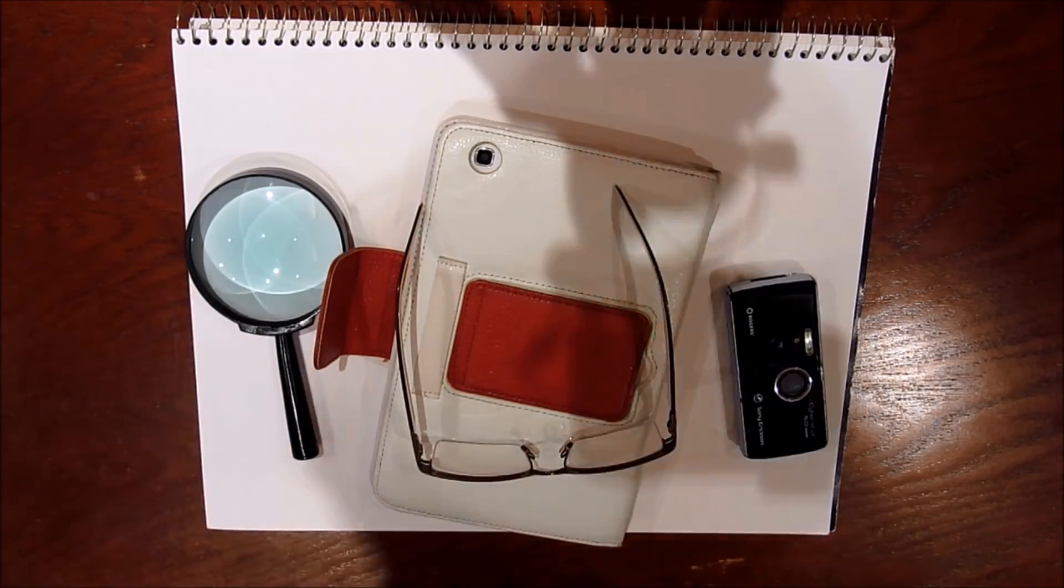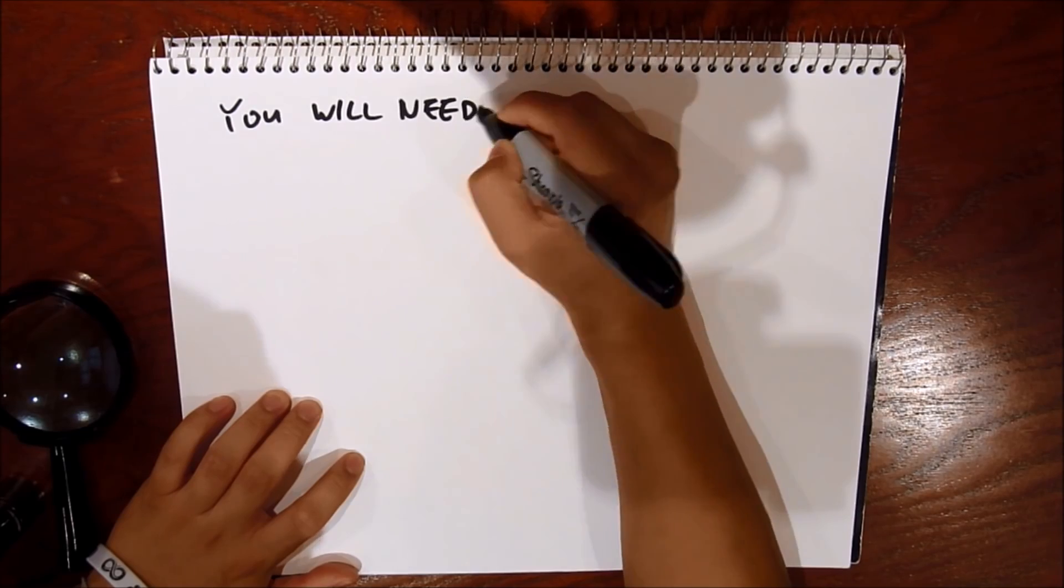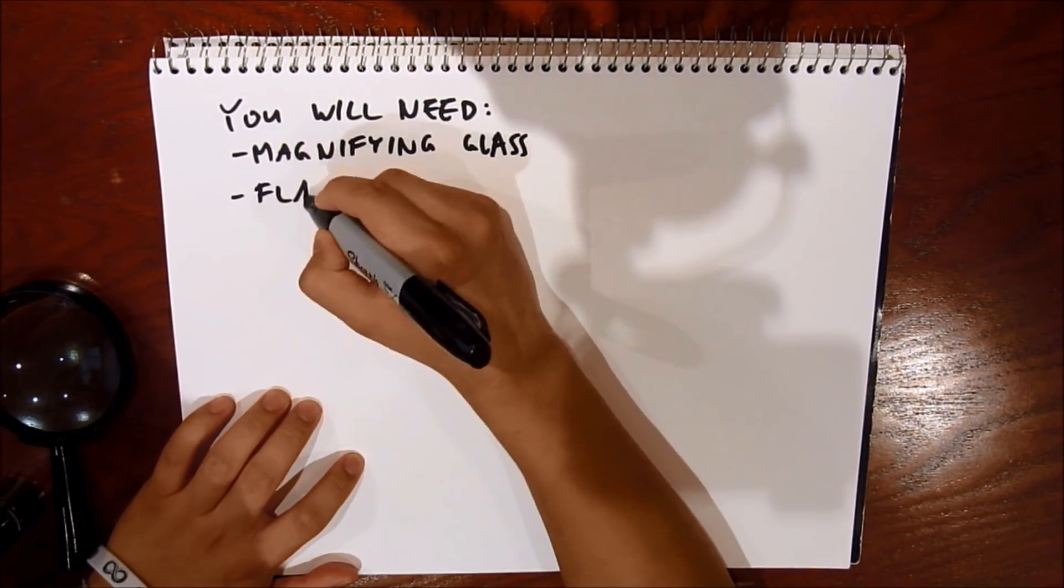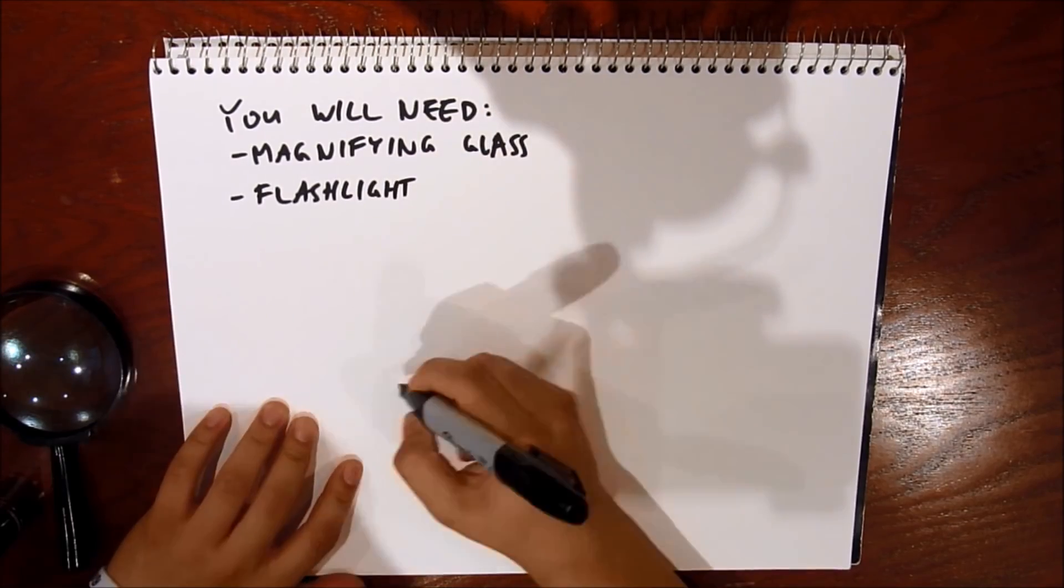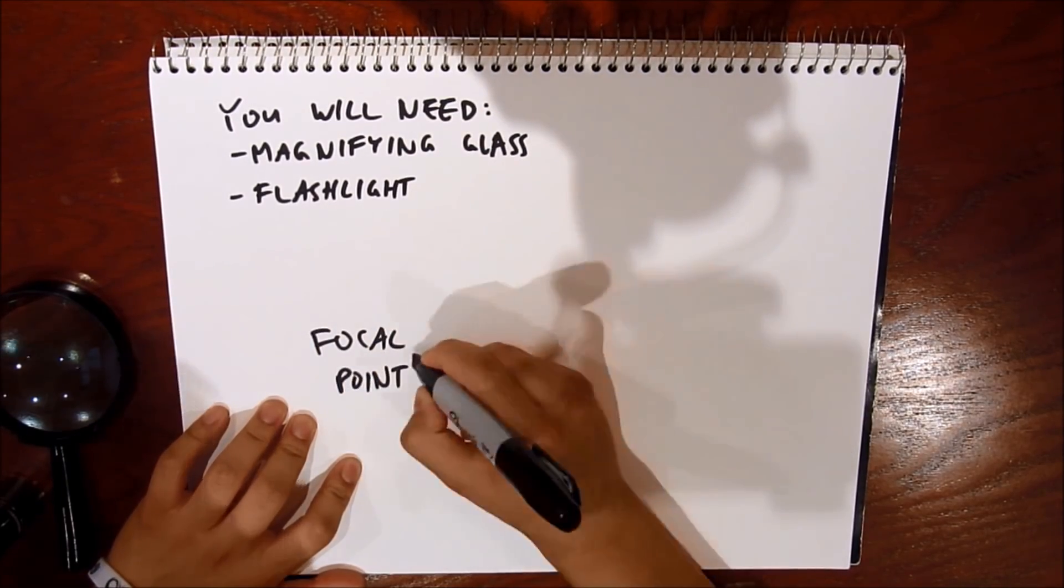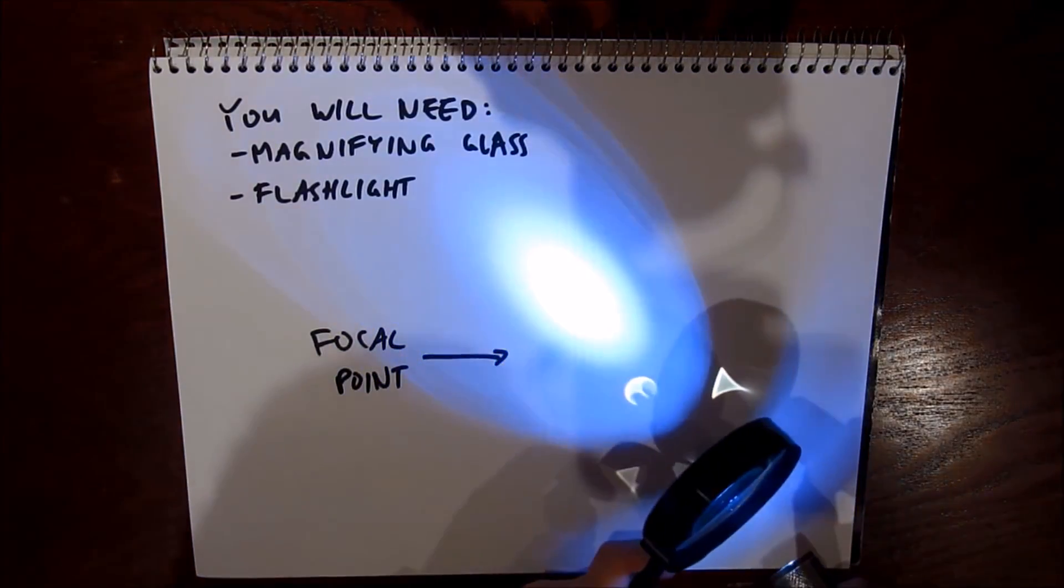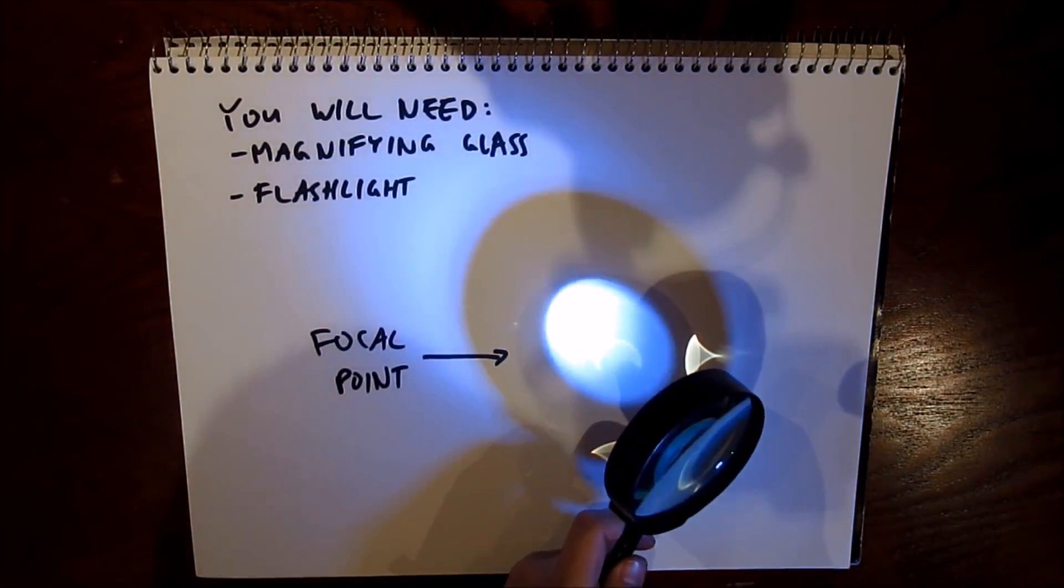For this experiment, we're going to be looking at what a focal point is. And that's when you have a large light source and the light rays come together and hit a focal point in one point. And you're gonna be seeing that through this exercise. And you can even try it at home. All you need is a magnifying glass and a flashlight.